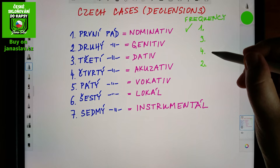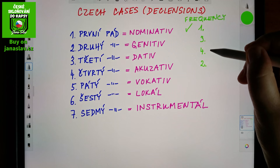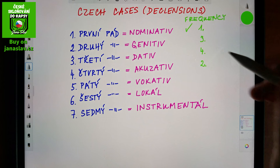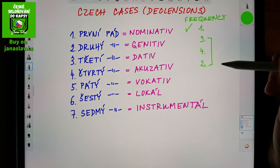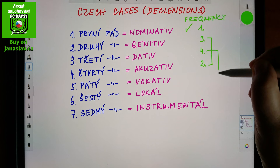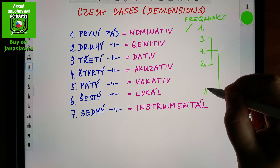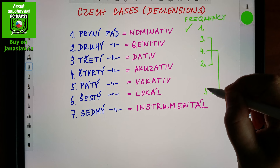For example, you're sending somebody an email — that somebody will be in the dative case. Or you're congratulating somebody — again, that's dative. The genitive and accusative sometimes have similar or the same endings, and the same relationship exists between the locative and the dative, so when you learn a bit about the dative, the locative becomes easier.